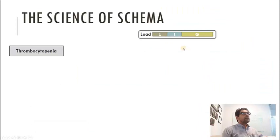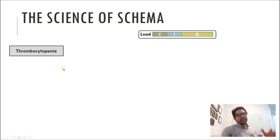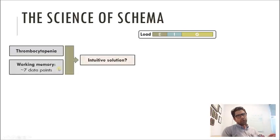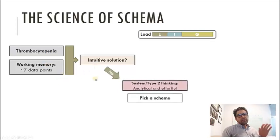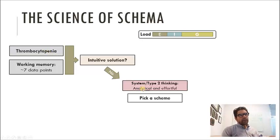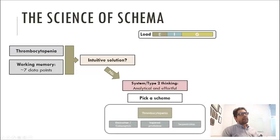There's a reason we all love schema, and there's good science behind it. If I have a problem like thrombocytopenia with a hundred different causes, I need an approach. I can't think of a hundred different things in working memory — I can only hold about seven. And if there's no immediate intuitive solution, I need some way to organize my thoughts, engaging system two thinking — analytical and effortful — to simplify the problem.